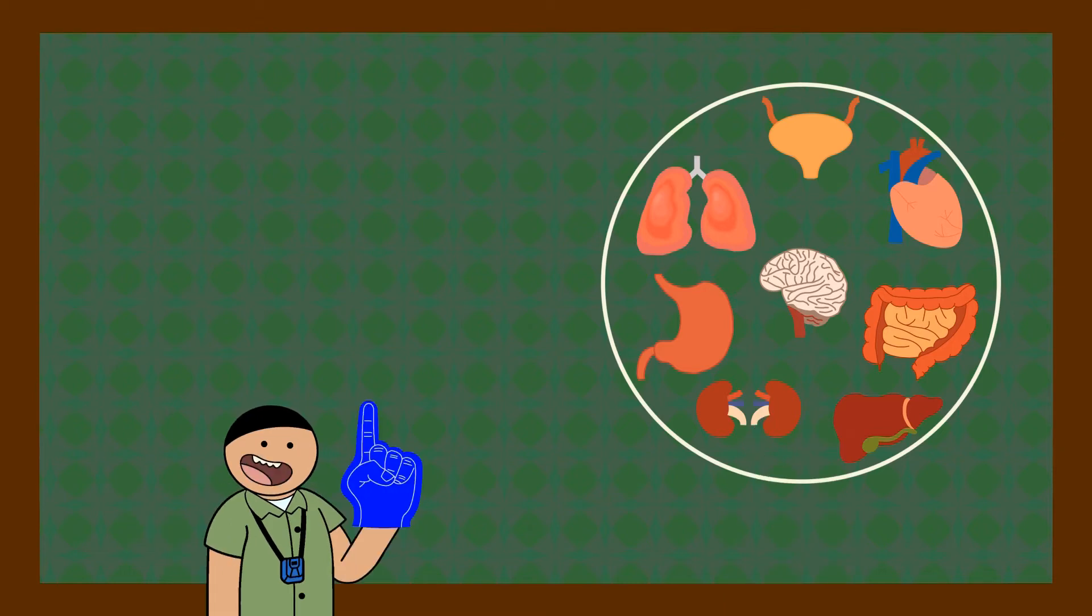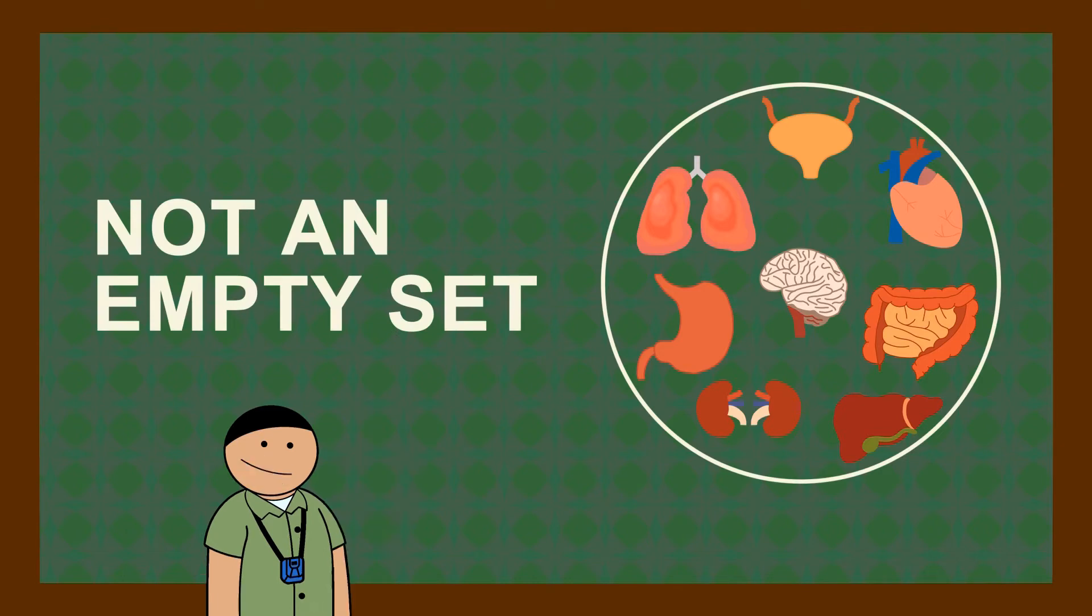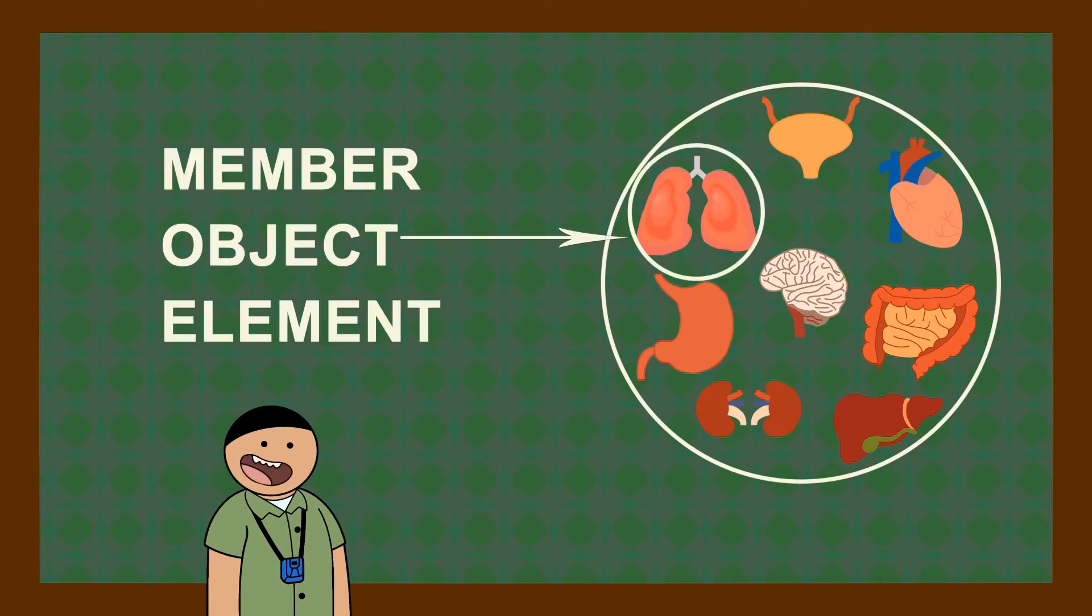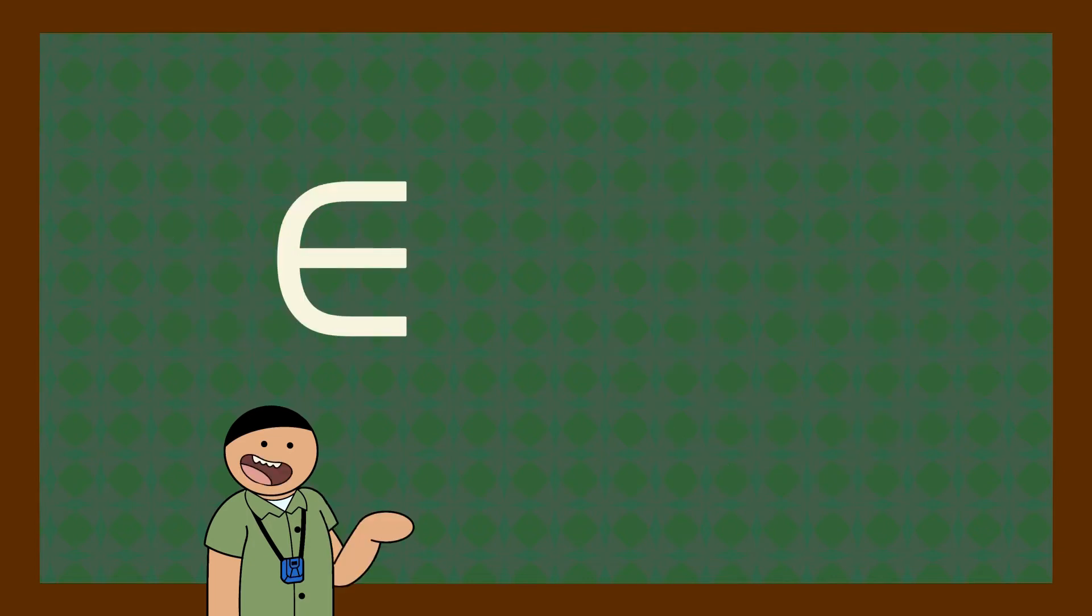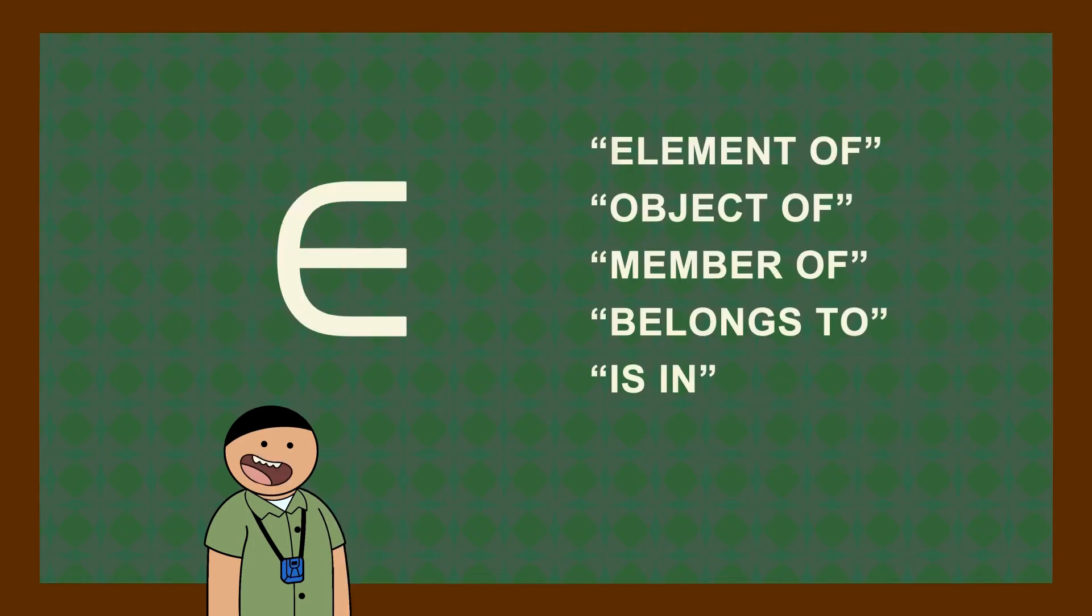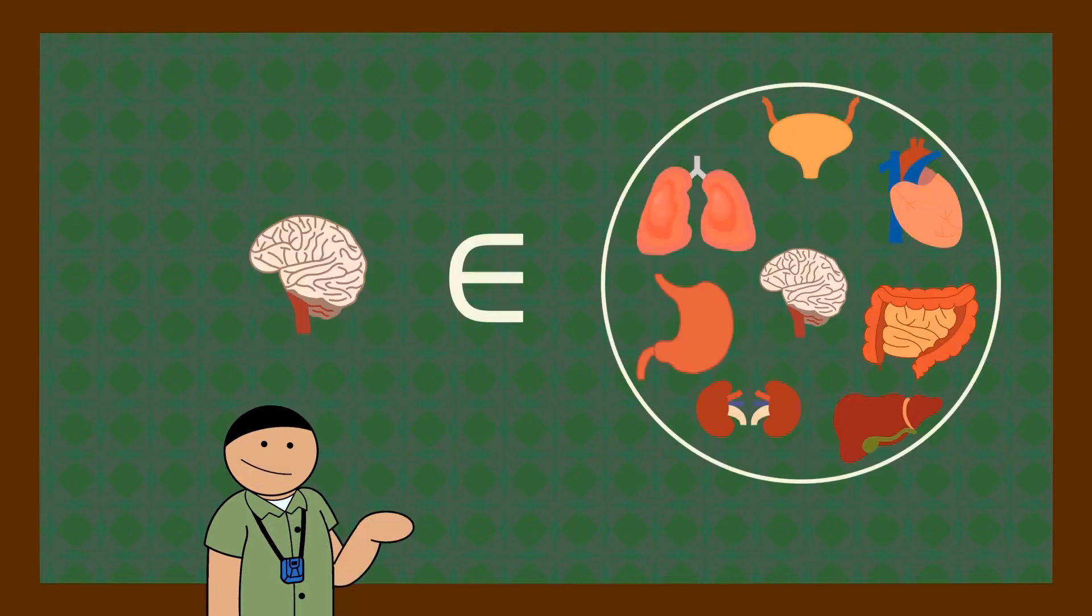If a set contains something, then it's not an empty set anymore. That something is called member or object or element of the set. This is the set membership symbol. This symbol means element of, object of, member of, belongs to, or is in. For example, the brain is an object of the set of internal organs.